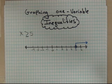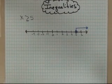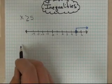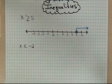So the next example I want to show you is one where it's not inclusive of the number we're talking about. So let's do something like x is less than negative 2.